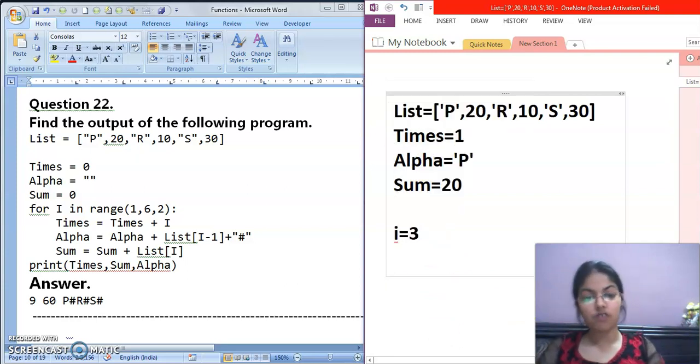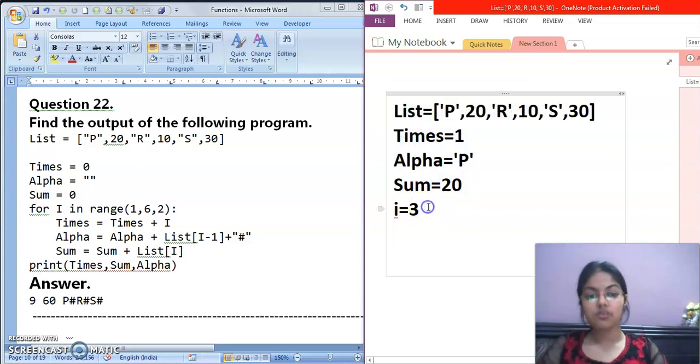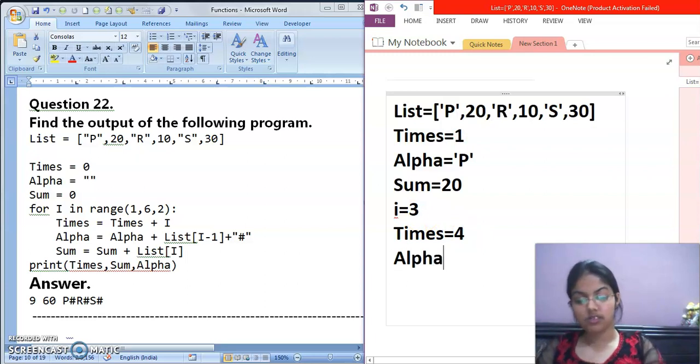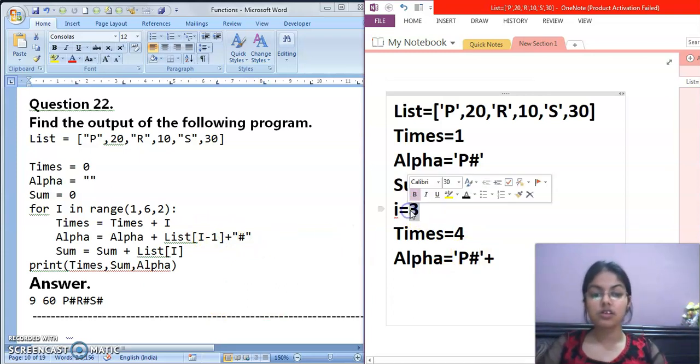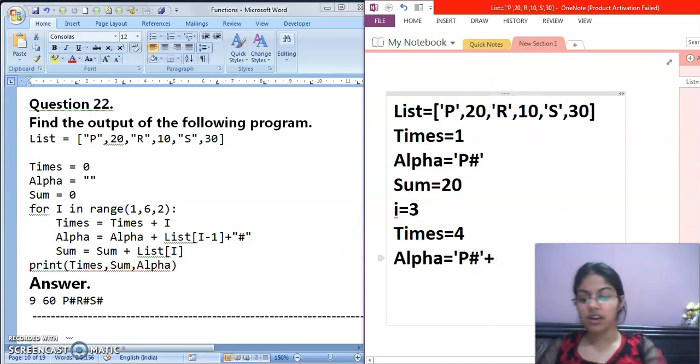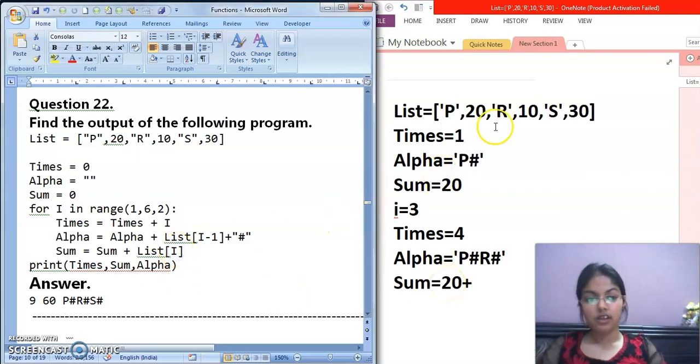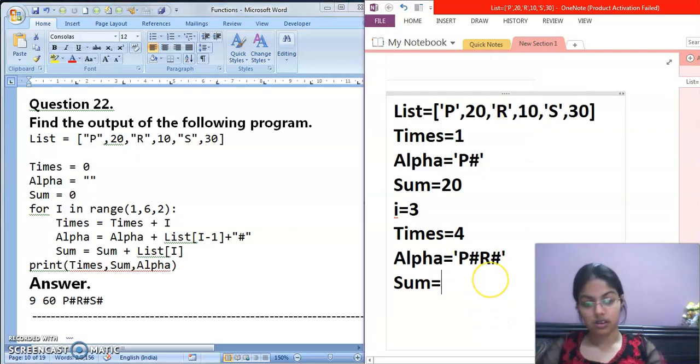Now value of I is 3. Three values ke liye loop will run. I ka 1, 3 and 5. 1 we have done, now for 3 we'll check. Times equals to times plus I. Times mein kya value? 1. 1 plus 3 is 4. Next, alpha equals to alpha plus. Alpha mein what is? P. Plus list of I minus 1. Value of I is 3, 3 minus 1 is 2. List of 2 what value? R. So now what has come? R. And then sum equals to sum plus. Sum mein value kya hai? 20. 20 plus list of I. List of 3. 20 plus 10 is 30. So 30 will be there.